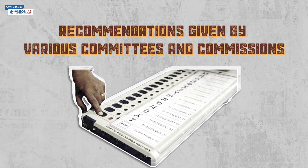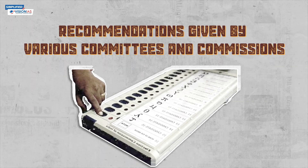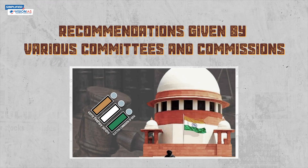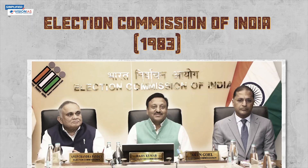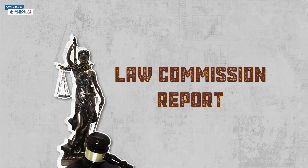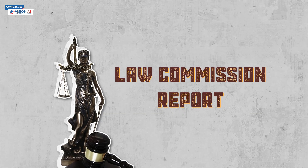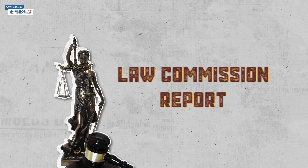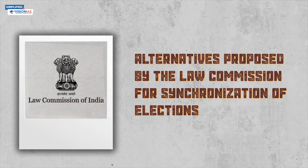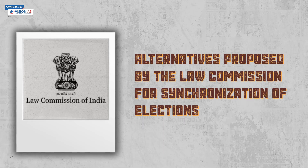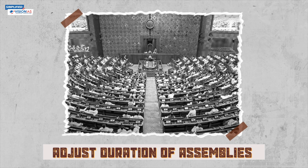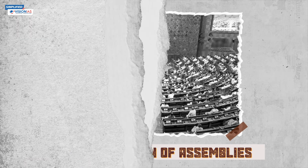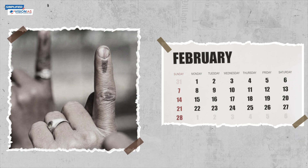The idea of simultaneous elections has been brainstormed earlier by many committees and commissions, including the Election Commission of India and the Law Commission. The Election Commission of India in 1983 and the Law Commission in 1999 in its 170th report recommended simultaneous polls to the Lok Sabha and state assemblies. The Law Commission gave three alternatives for synchronization: advance or postpone election timings in certain states; conduct elections only twice in five years; or conduct all elections falling in a calendar year together.